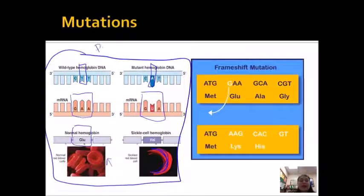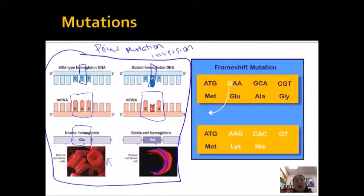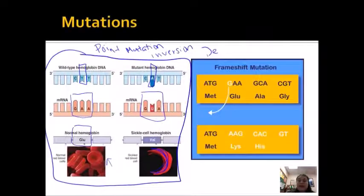So that's an example of a point mutation, also sometimes referred to as an inversion because a different base is put in place of another base. On the other side, we have what is called a frameshift mutation. A frameshift mutation is either going to be a deletion where a base is completely removed, or an insertion.